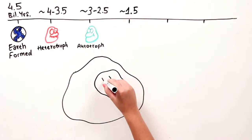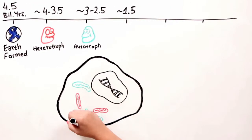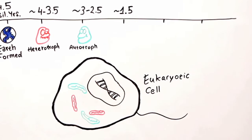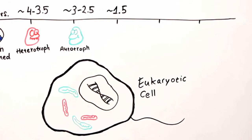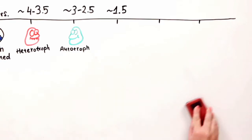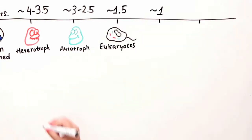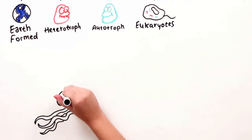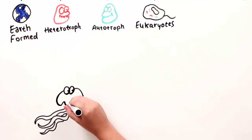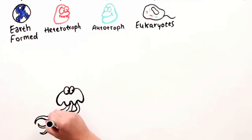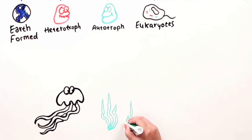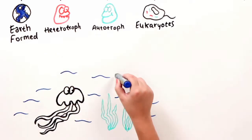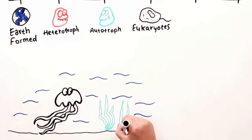Unicellular eukaryotic cells evolved about one billion years later. Eukaryotic cells are the type of cells that our bodies are made up of, and the bodies of all animals and all plants. But multicellular organisms only started to appear about one billion years ago. All of these organisms evolved in the oceans, as the oceans provided an environment that was both nourishing and protective.